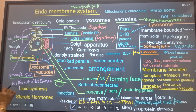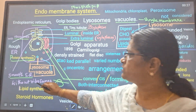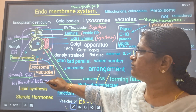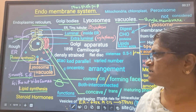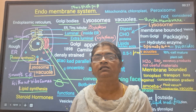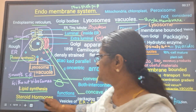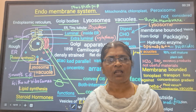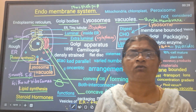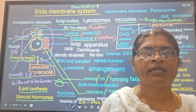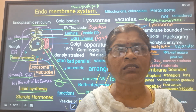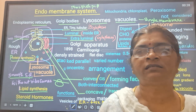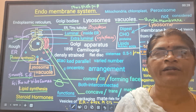ER lacking ribosomes is smooth ER. Smooth ER is involved in lipid synthesis. So: rough ER for protein synthesis, smooth ER for lipid synthesis. Lipid synthesis means steroid hormones - testosterone, estrogen, progesterone - as well as adrenal cortex steroid hormones. In all these cells, smooth ER makes the synthesis of steroid hormones and lipid synthesis.